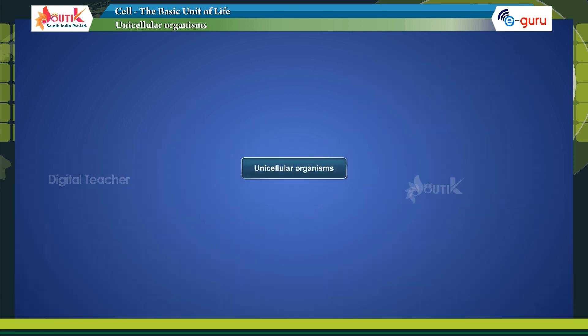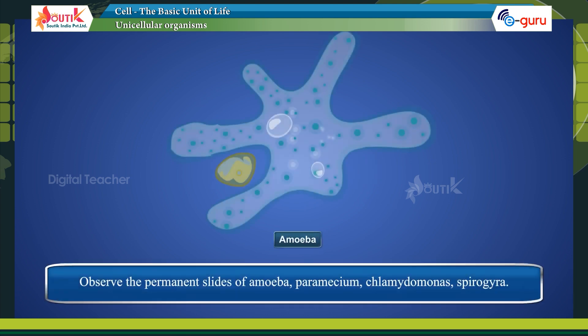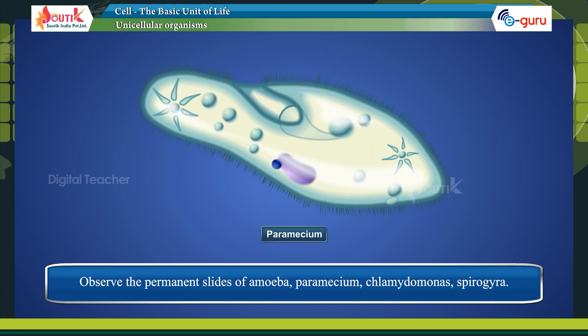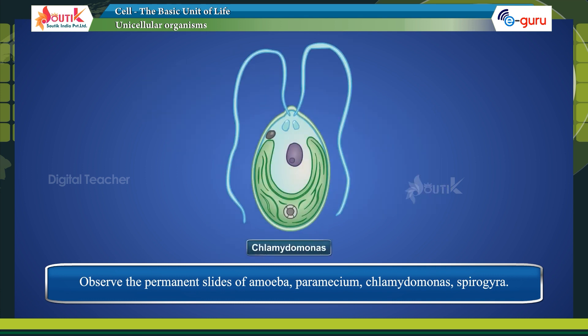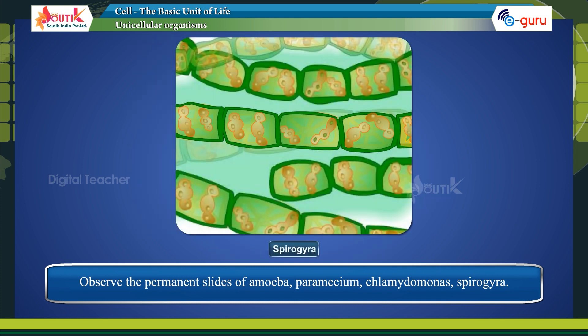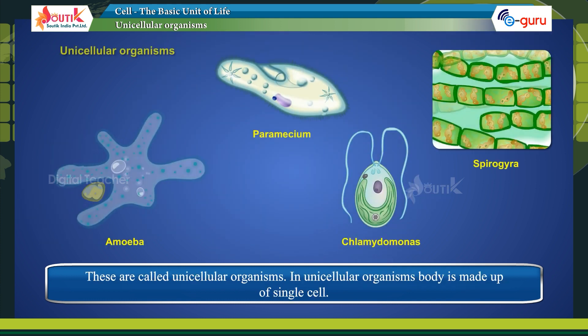Unicellular organisms. Observe the permanent slice of amoeba, paramecium, chlamydomonas, and spirogyra. These are called unicellular organisms.